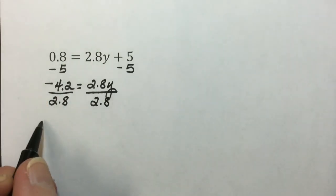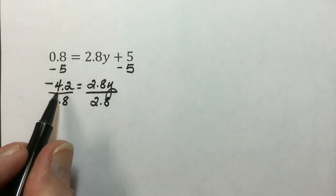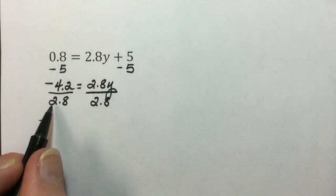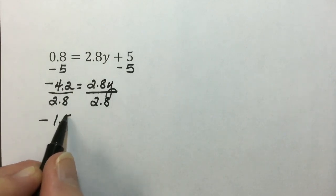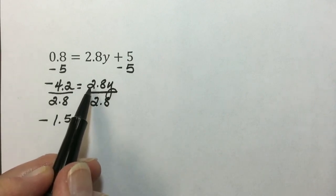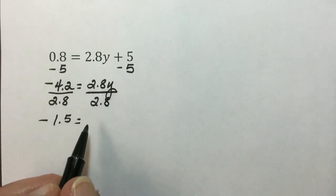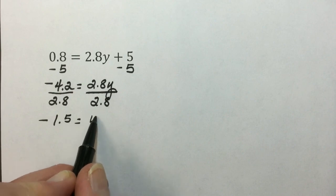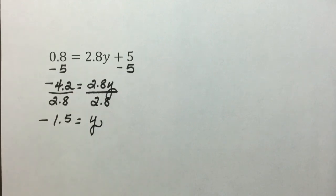A negative divided by a positive is negative. If we divide 4.2 by 2.8, the result is a 1.5. Here, 2.8 cancels out, leaving a 1 times y or simply y for a solution.